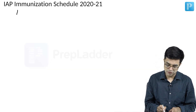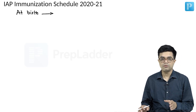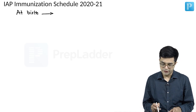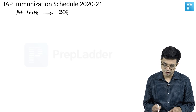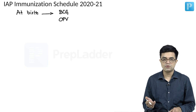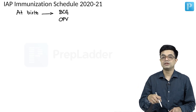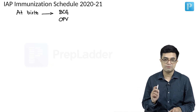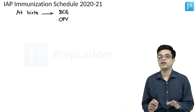First of all, when you talk about vaccines given at birth, in case of the national immunization schedule, we are giving BCG, 0 dose of OPV, and 0 dose of hepatitis B. In the IAP schedule, we do not use the term '0 dose.' BCG will be given just like the national immunization schedule. You will give OPV, but we do not call it a 0 dose — only a single OPV dose is given at birth, and subsequent doses of OPV are not part of the IAP schedule.